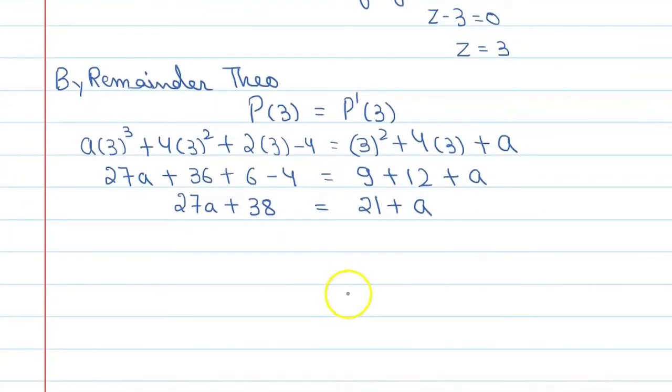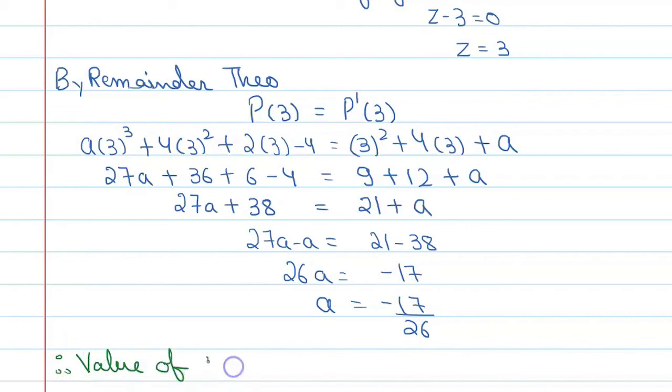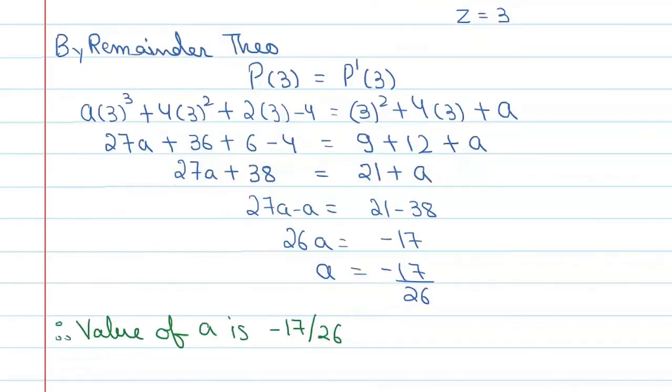A is equal to -17/26. A is equal to -17/26, and the correct option is B.